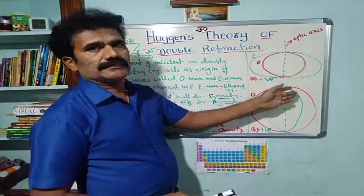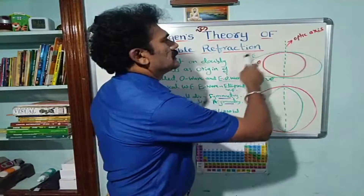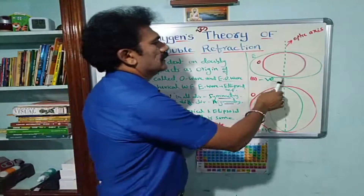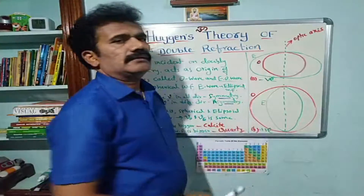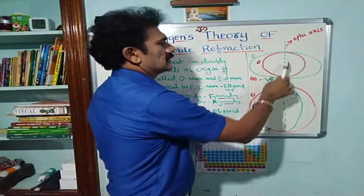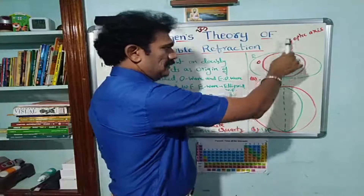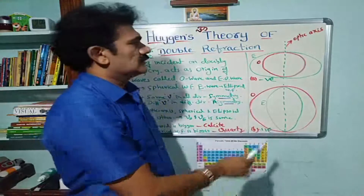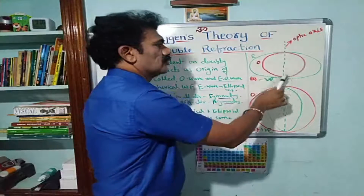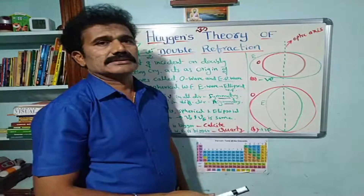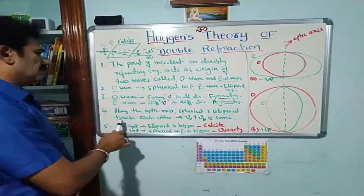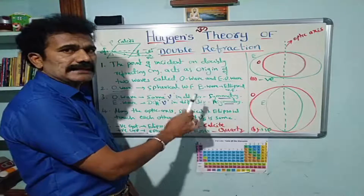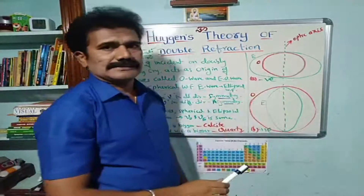Looking at the diagram: the ellipsoid wave front and the spherical wave front touch each other at two points. The line joining those two touching points is called the optic axis. Along the optic axis, the velocity of the ordinary ray and the extraordinary ray is the same.